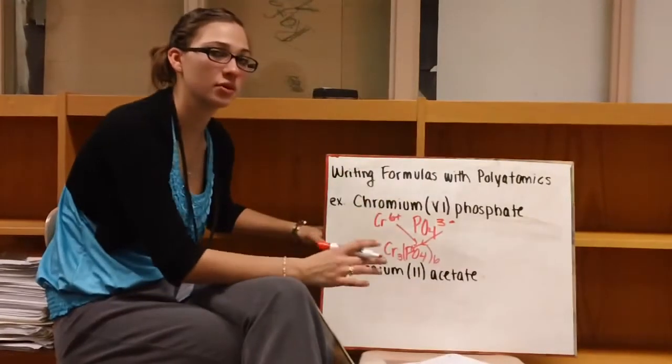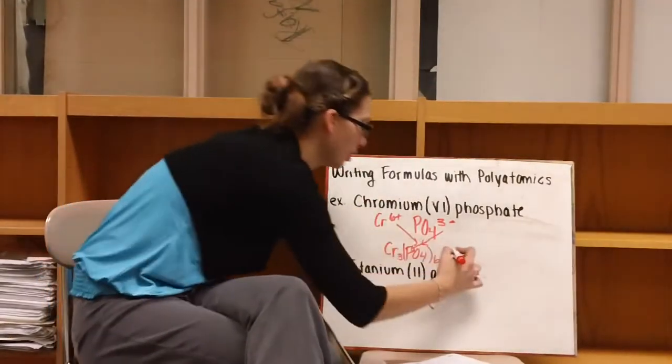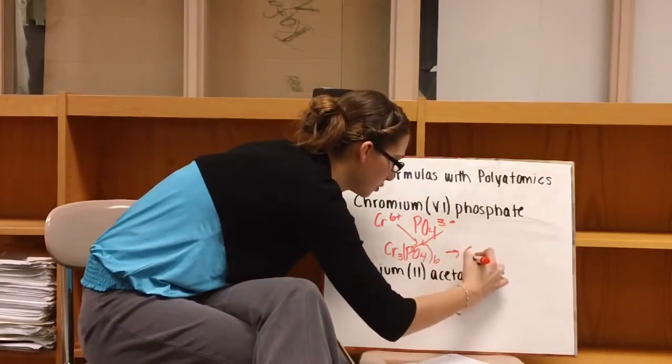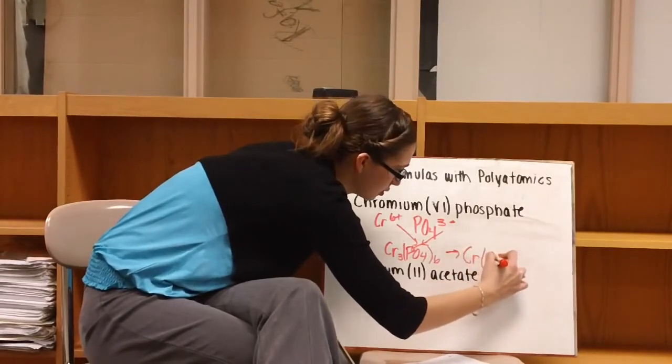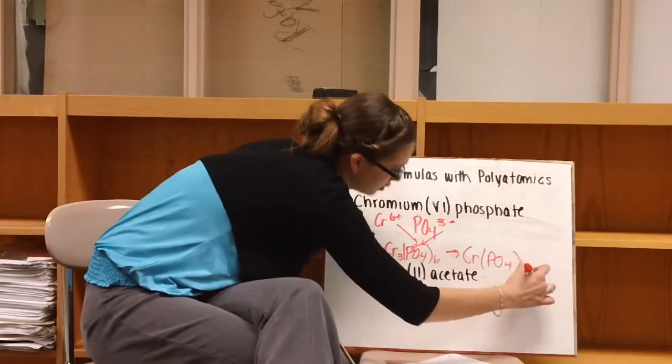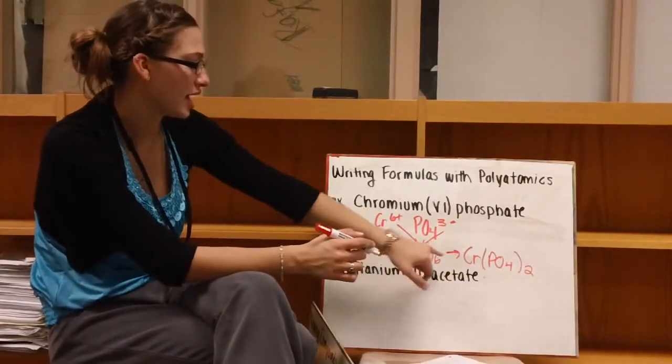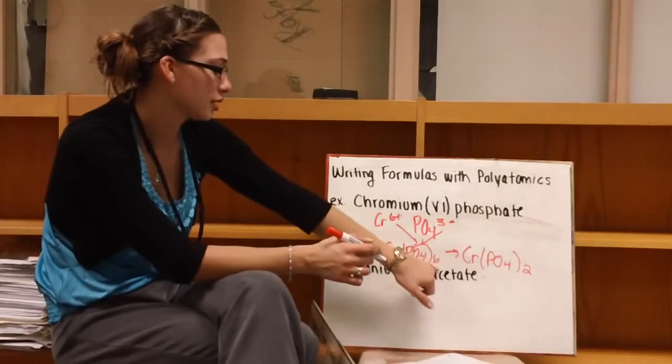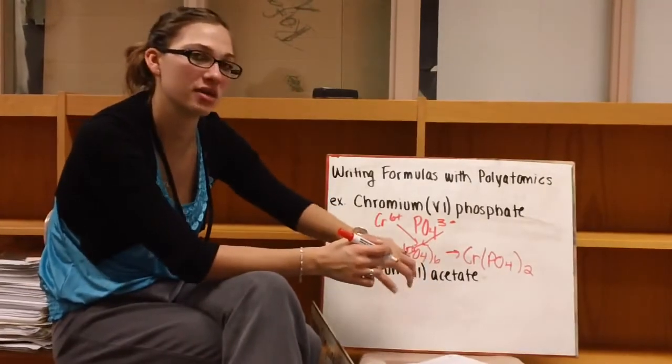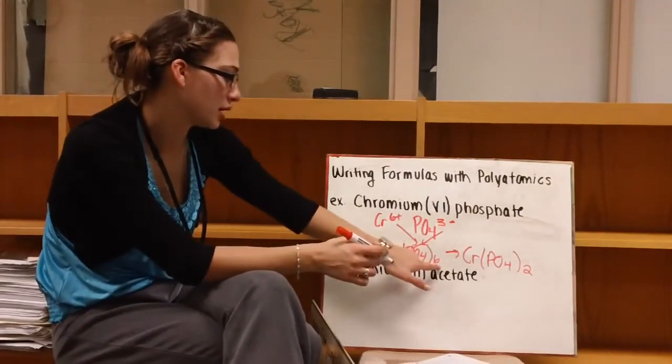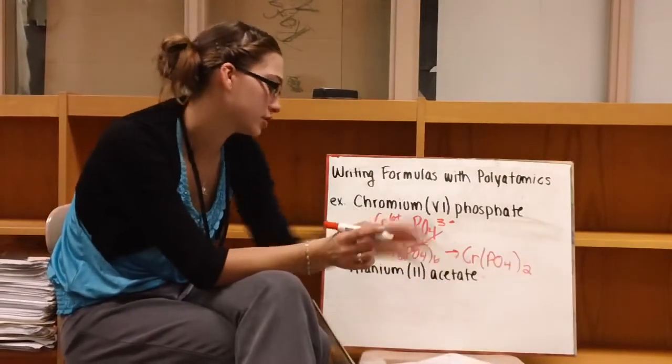Alright, so now we're going to crisscross our charges. And this can be reduced. So whenever it can be reduced, make sure you do that. Cr2(PO4)3, because we can divide both of our subscripts by three, and we get one over here and two here. So Cr2(PO4)3.